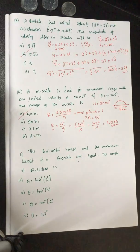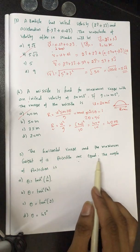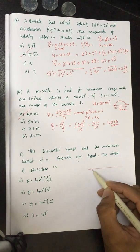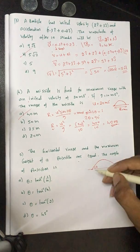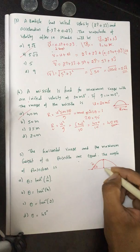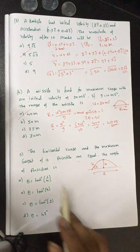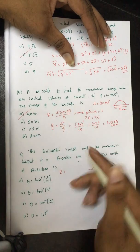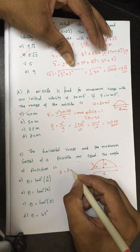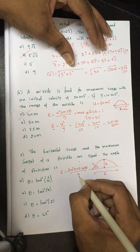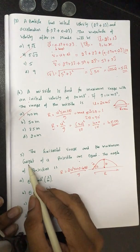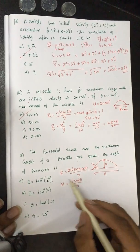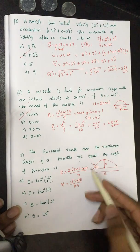The last question in this part: the horizontal range and the maximum height of a projectile are equal. What is the angle of projection? A body is projected at angle theta with initial speed u. The maximum height and horizontal range are given, and we are told these two are equal. We need to find theta.